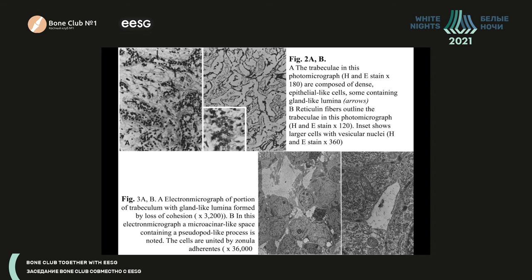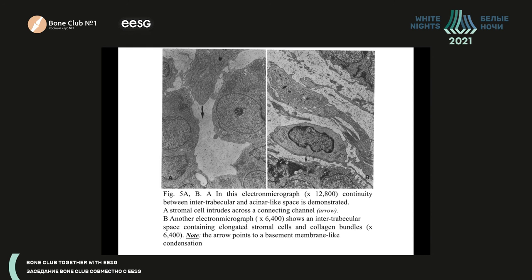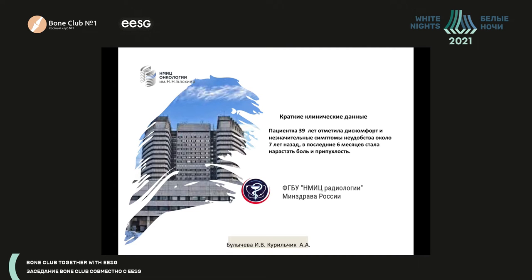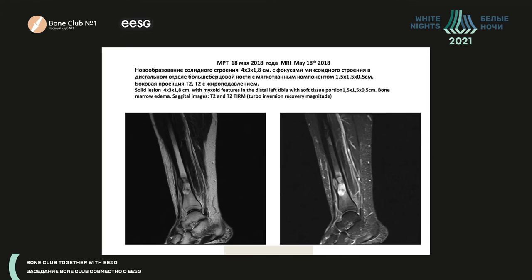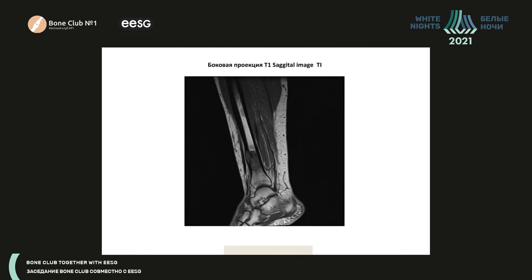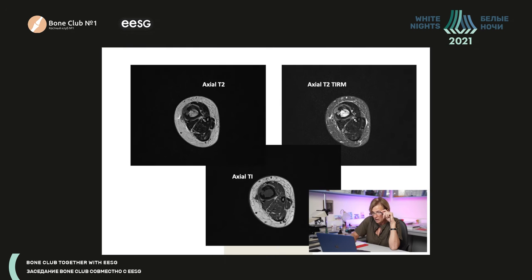After hearing about such a case, when a similar situation emerged in our clinic, I thought about it. Here we have our patient — a 39-year-old woman who for seven years complained of some discomfort and unclear symptoms in her lower leg. During the last six years the symptoms began to aggravate with pain and some edema. On X-ray, they found a tumor at the distal part of her tibia with a soft tissue component and a myxoid sign in the tumor matrix.